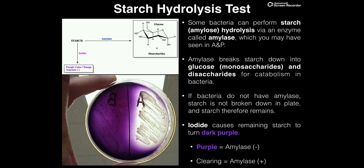Only some species of bacteria actually have this enzyme amylase. The ones that do would be amylase positive; the ones that do not have this enzyme would be amylase negative. We can use what's called the starch hydrolysis test in order to determine whether or not the species of bacteria in question have this enzyme amylase.